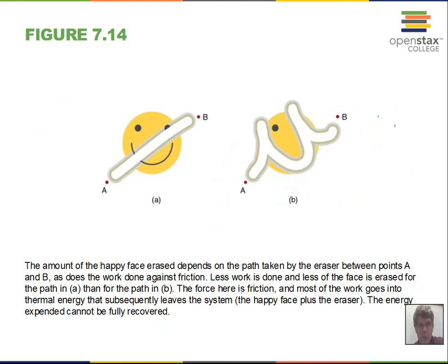Now we come to a non-conservative force: friction. An eraser rubbing along a surface — the amount of work done by friction depends on the path. Dragging the eraser from A to B along a short path does a little work by friction; scribbling a longer path does more work by friction. For gravity and springs, work doesn't depend on motion details — only the final and initial locations matter. For friction, we must know the total path to calculate energy lost. Friction always opposes the velocity, so we always get the full friction force times the path length.